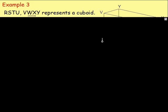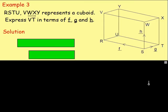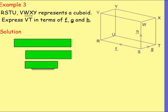Example 3. R, S, T, U, V, W, X, Y represents a cuboid as you can see here. Express VT — going from V to T — in terms of F, G, and H. What we're really thinking is we want to go from V all the way down to T, but we can't do that directly because we don't know that vector.